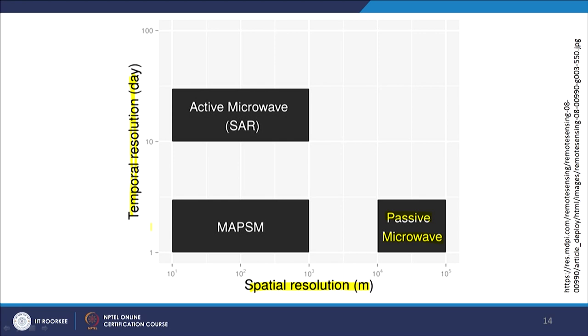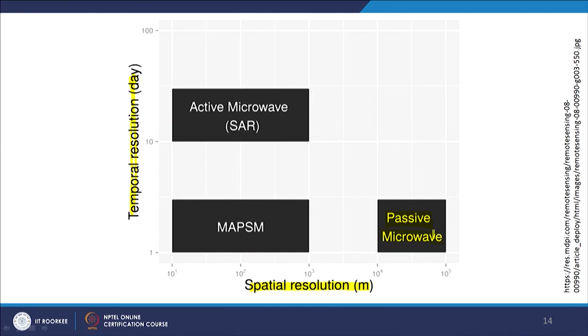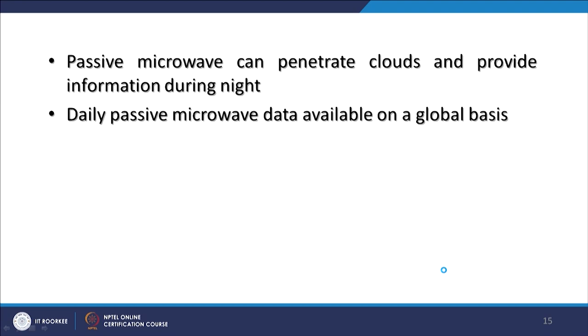Higher spatial resolution means poorer temporal resolution and vice versa — higher temporal resolution generally comes with coarser spatial resolution, as depicted here. Passive microwave can provide data almost every day, but in case of active microwave the temporal resolution is about 35 days. These are the limitations of active microwave and simultaneously the limitations of passive microwave in terms of spatial resolution, which runs in kilometers.